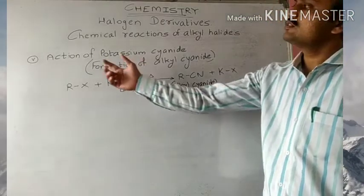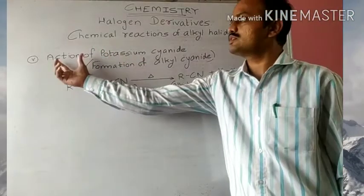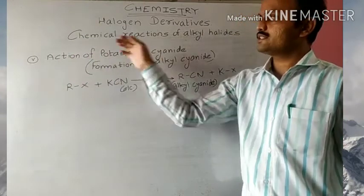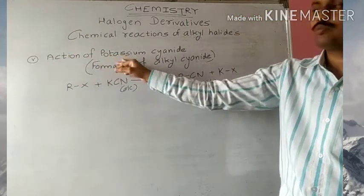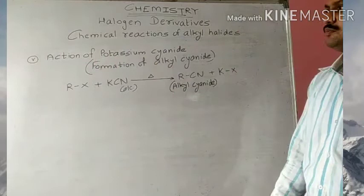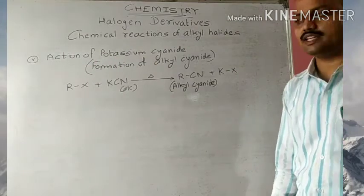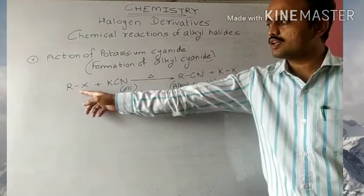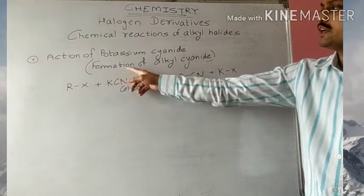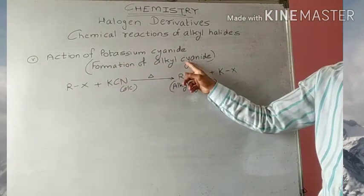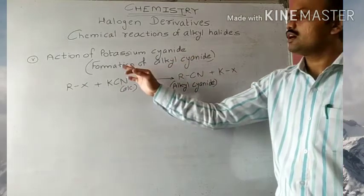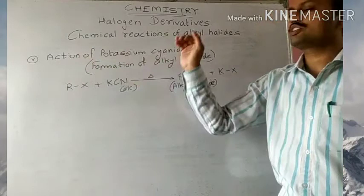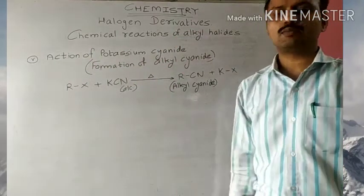In this session, students, we will see the next chemical property of alkyl halides, that is the action of potassium cyanide. Potassium cyanide is KCN, and when potassium cyanide reacts with alkyl halide, we get formation of alkyl cyanide. So we can say formation of alkyl cyanide, or action of potassium cyanide, for this particular chemical reaction.